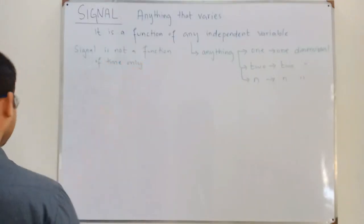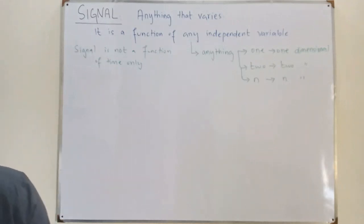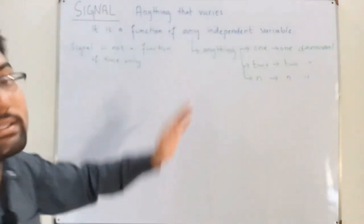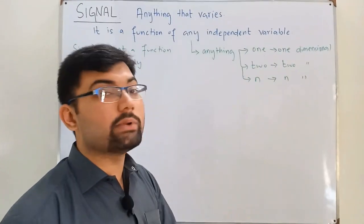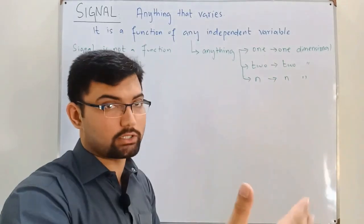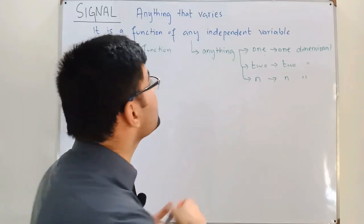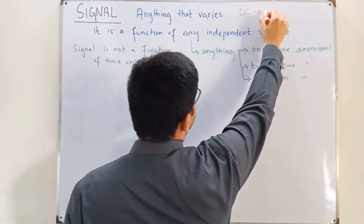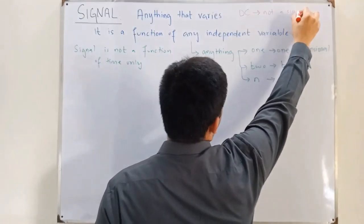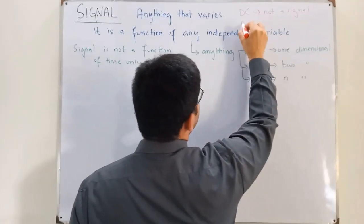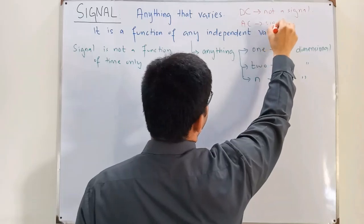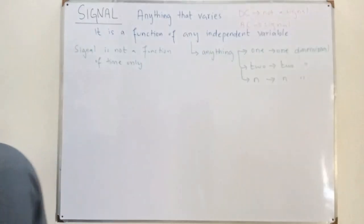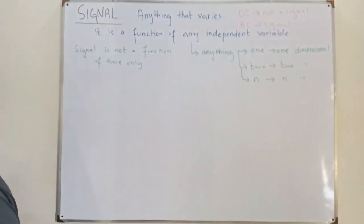Since we mostly deal with DC and AC quantities as electrical engineering students, a DC quantity is not a signal because it does not vary, while an AC quantity is a signal.